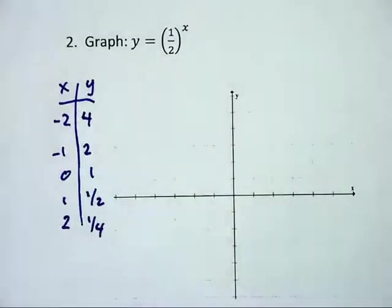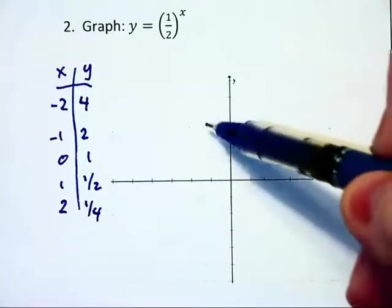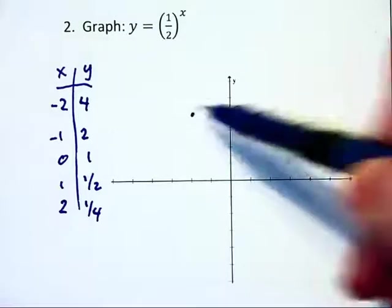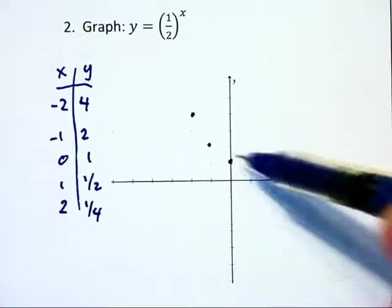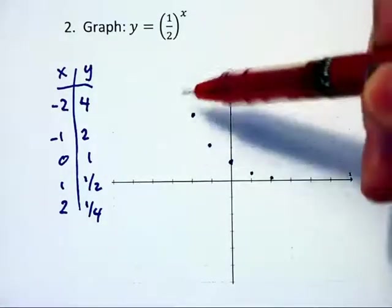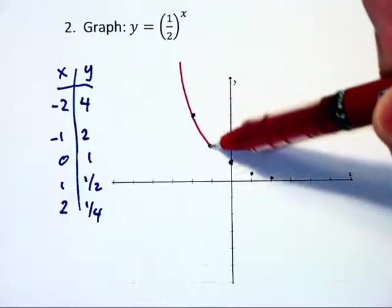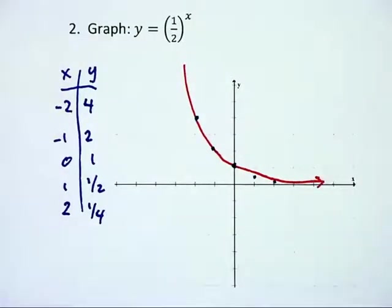Very similar to the numbers we had in the previous graph except sort of reversed. Our graph this time is going to be negative 2, 4, negative 1, 2, 0, 1, 1, 1 half, and 2, 1 quarter. So you can see that we have the previous graph just reflected across the y-axis.